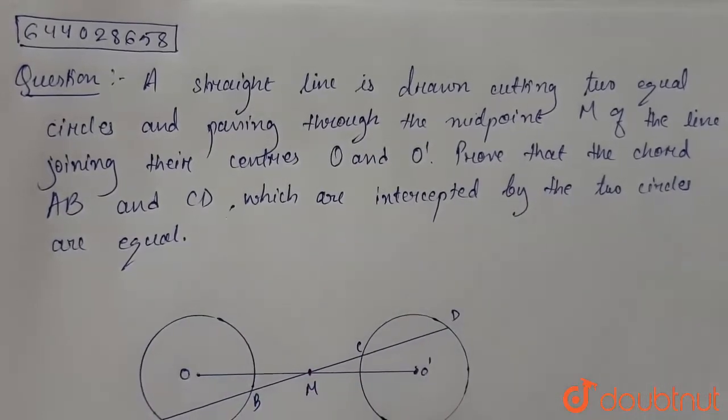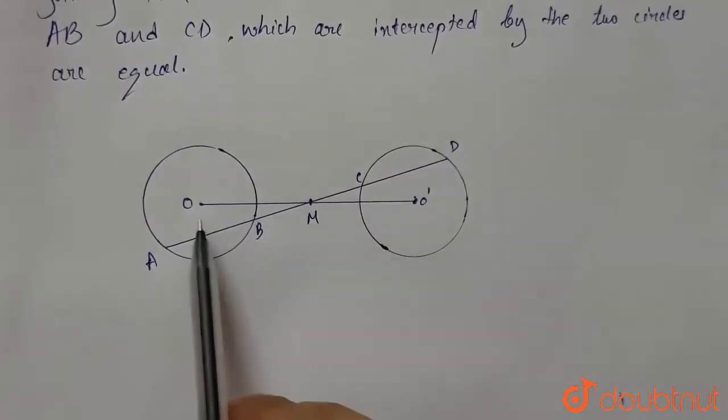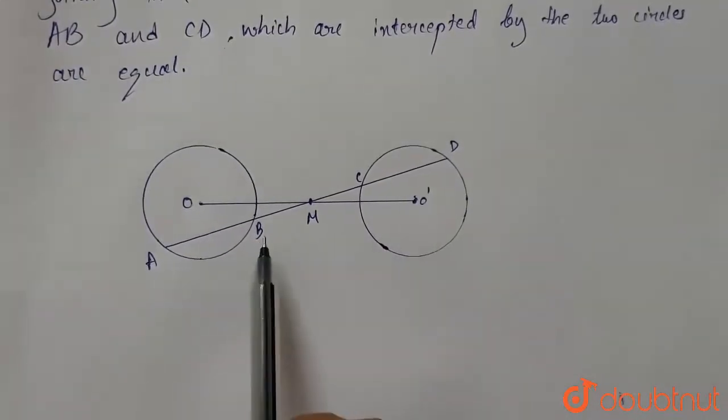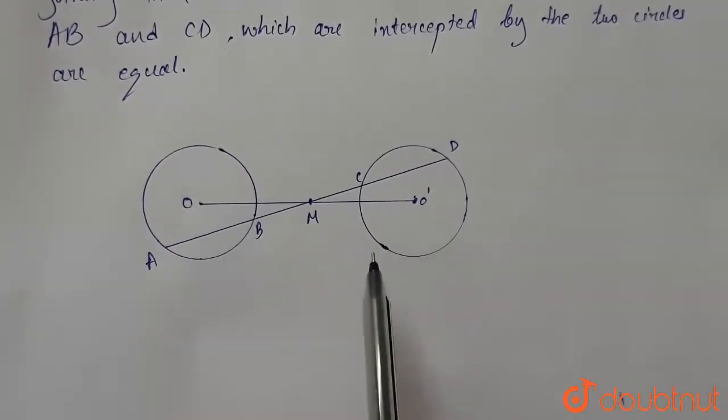So what we are given is that we have two circles with center O and O dash, and M is the midpoint of OO dash. And we have AB and CD as chords which we have to prove are equal.